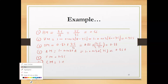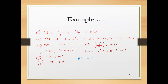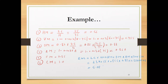Based on these values we calculate RWL, which equals the load constant multiplied by the six multipliers: HM, VM, DM, AM, FM, and CM. That is 23 × 0.56 × 0.955 × 0.88 × 0.856 × 0.55 × 1. The RWL is 5.08 kilograms — that is the load that should be handled under these conditions.